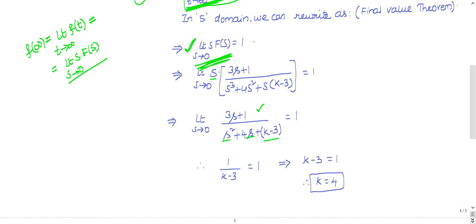Now put s equals 0 in this limit. What happens? 3×0 is 0, plus 1 is 1, divided by 0² is 0, plus 4×0 is 0, plus k - 3, equal to 1. If you simplify this, k - 3 equals 1, so k equals 4.